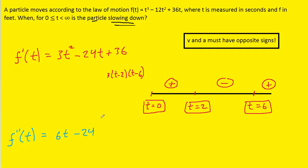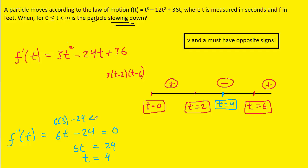Next, we do a similar calculation for the acceleration. Setting the acceleration equal to 0: adding 24 to both sides, we find t equals 4. So at t equals 4 the acceleration is zero. We plot t equals 4 on the number line. Picking t equals 3 to the left of 4: 6 times 3 minus 24 gives a negative answer, so from 0 to 4 seconds the acceleration is negative. Picking t equals 5 to the right: 6 times 5 minus 24 gives a positive result, so the acceleration is positive for all times past 4 seconds.